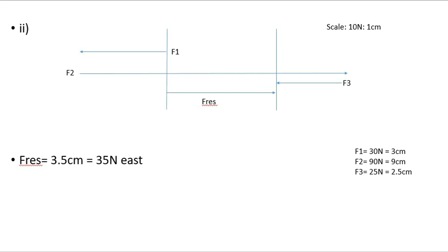Now we can calculate. Our scale is 10 newtons to 1 centimeter. Therefore, F1 equaling 30 newtons is 3 centimeters, F2 is 9 centimeters, and F3 is 2.5 centimeters. We can subtract them, and what we get is F resultant equals 3.5 centimeters, which gives us 35 newtons. Our final answer is 35 newtons east.